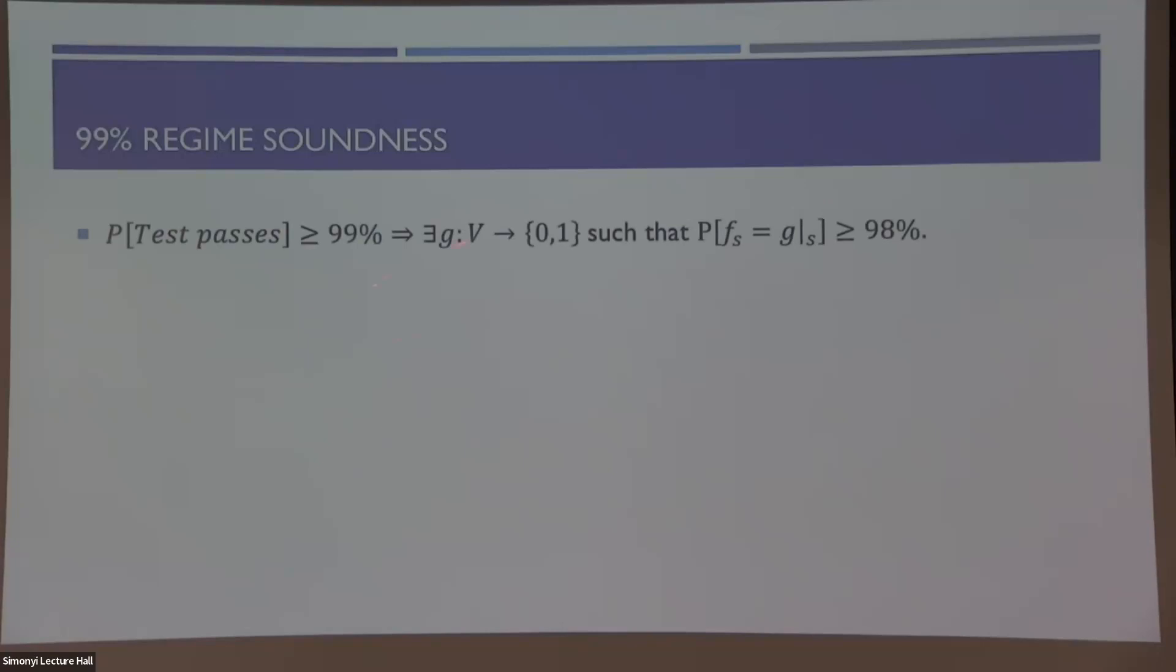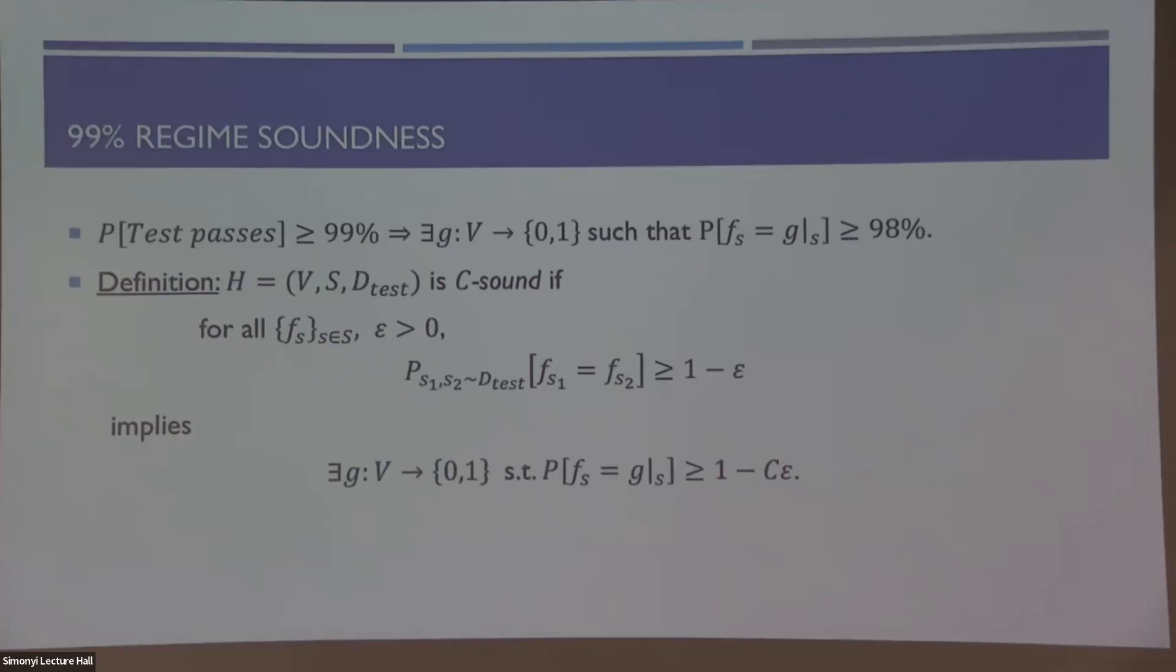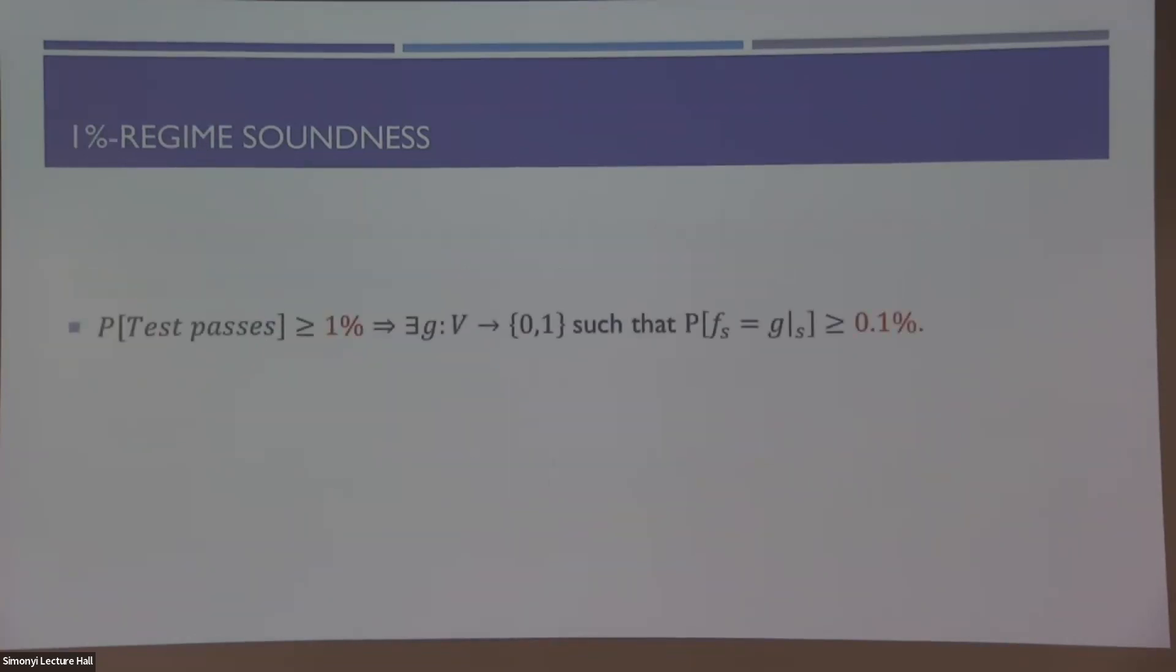So this is a nice test. The main question in this field is to determine in which set systems is this test actually meaningful? Does it actually say something about the property we're interested in? The sound guarantee that I want roughly says that if we can say that the test passes most of the time, then there should exist a function on the whole vertex set that most of these f of s's are restrictions of that function. To be more precise, we say that the set system is c sound for some c greater than zero. So if for every set of local functions and every epsilon, if this set of local functions passes our test with probability one minus epsilon, then we can find a function on the whole vertex set, so that on one minus c times epsilon of the collection of the sets, we have that f of s is equal to this restriction.